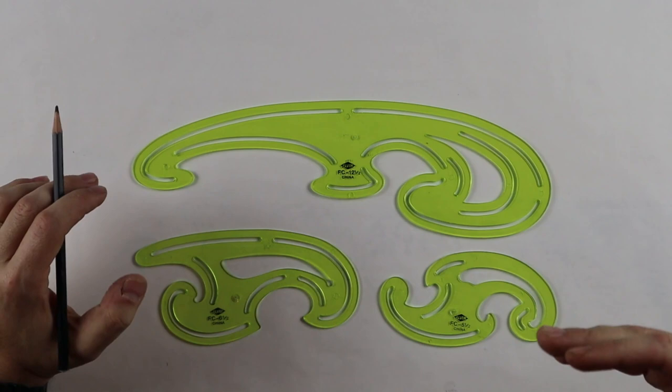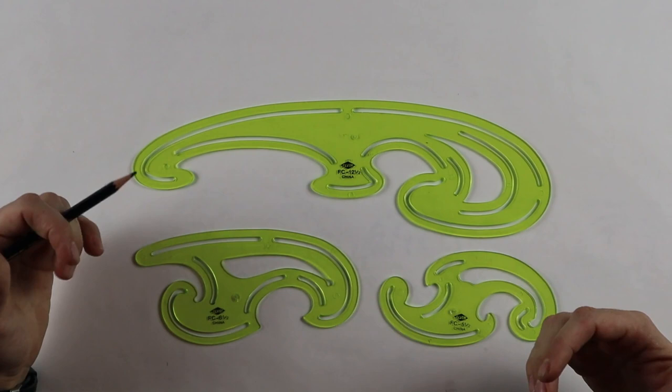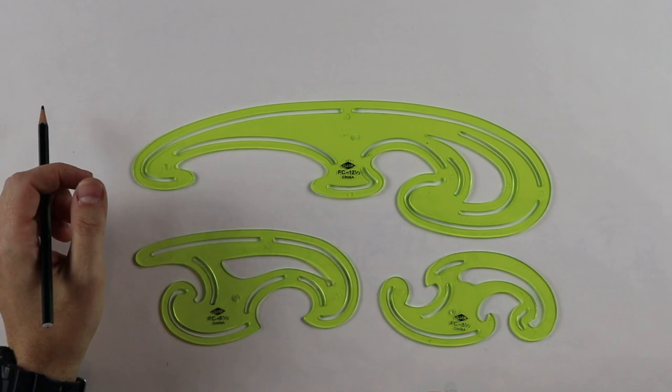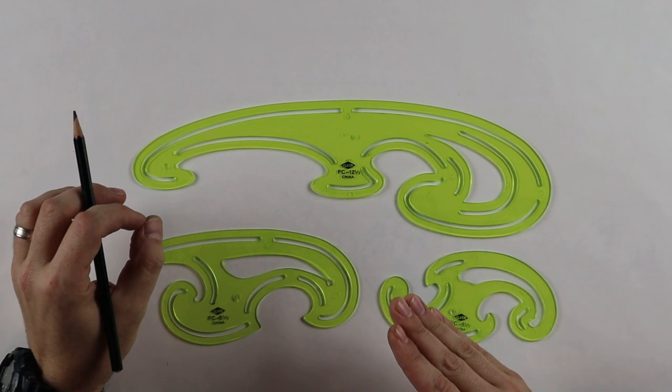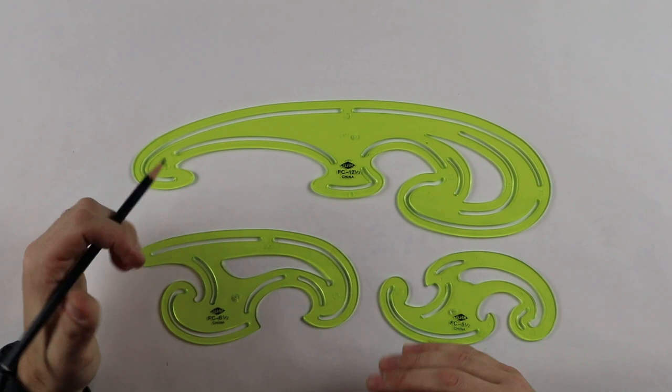The difference between French curves and some of the other things that we use is they're not a mathematical tool. With the adjustable triangle, with the scales, when I went through the purposes of using them, really there was one way in which you use them. It was a metric in which you needed to read in order to use it correctly.